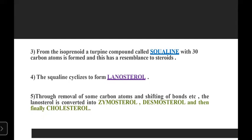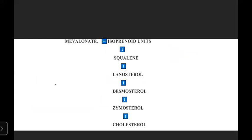To summarize the biosynthesis pathway: starting from mevalonate, then isoprenoid units, then squalene, then lanosterol, then zymosterol, then desmosterol — with carbon atoms reduced through various processes — and finally cholesterol is formed, which has 27 carbon atoms.